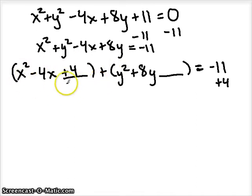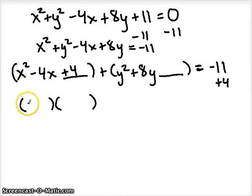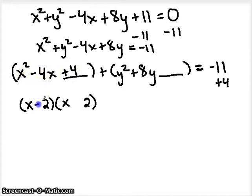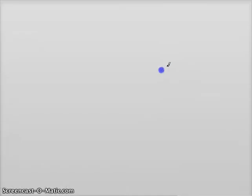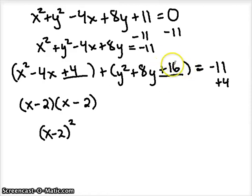We can now rewrite this quadratic as a square of a binomial. Take the square root of X squared, which is X, as the first term. The last term is the square root of 4, which is 2, keeping the negative sign from the middle. So this factors as X minus 2, times itself, or X minus 2 squared. For the Y terms, take half of 8 which is 4, square it to get 16, and add 16 to both sides of the equation to maintain balance.